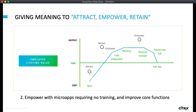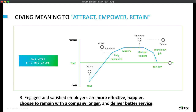It starts with the easy things — things like being able to request PTO without training should be a no-brainer. You shouldn't need a course to approve an expense report. But when I was running R&D for my hedge fund, we were building microapps on top of our trading engines to help traders make better decisions during intense periods, and finding ways to expose our portfolio management software to management on the road. If you can empower your employees at their core functions, you're going to retain them longer. Engaged and satisfied employees are more effective, happier, choose to remain with the company longer, and deliver better service.